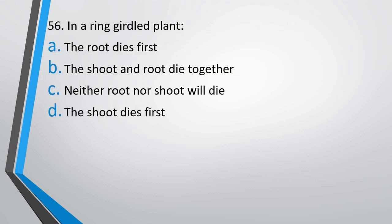Question number 56: In a ring girdled plant — the root dies first; the shoot and root die together; neither shoot nor root dies; or the shoot dies first? The correct answer is option A — the root dies first. Why? Because the nutrients which are synthesized in the leaves are not able to reach the root.